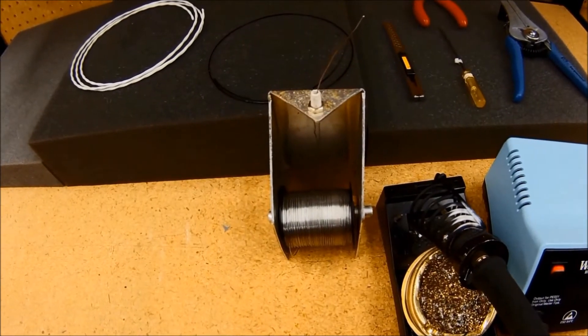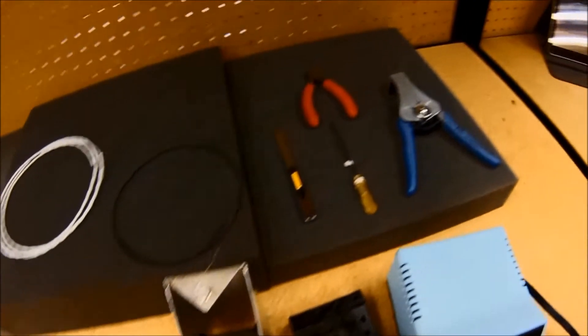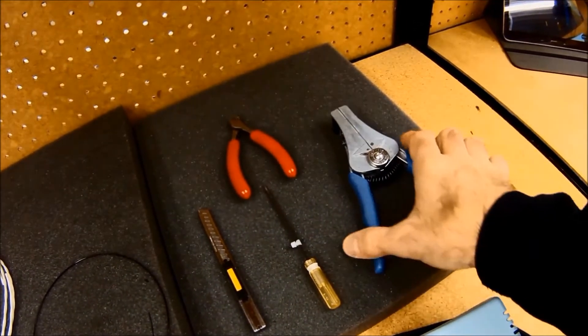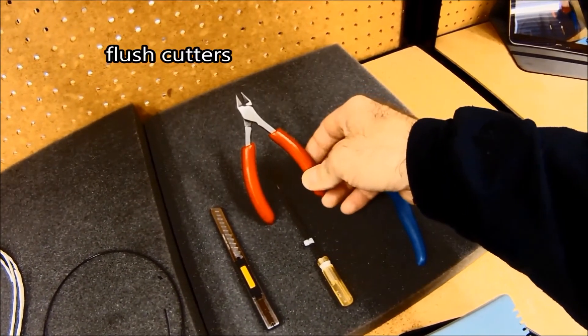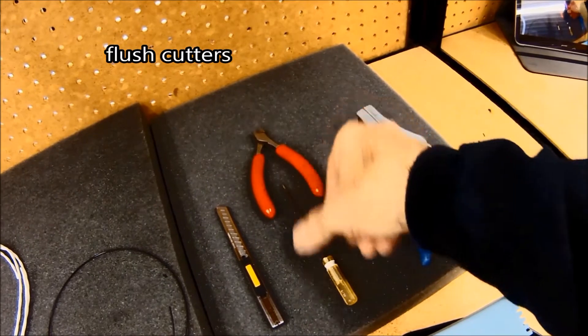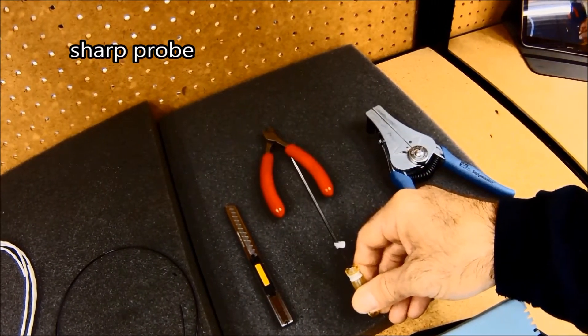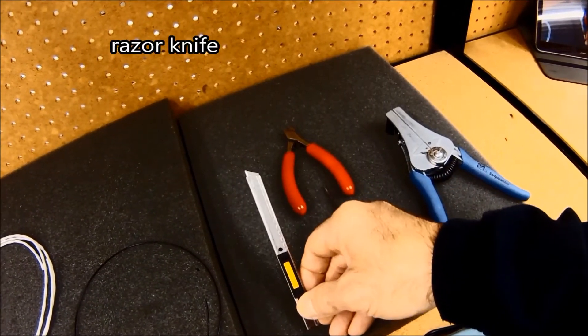I also have some 25 thousandths rosin core solder and some hand tools. I have wire strippers, flush cutting wire cutters, a sharpened probe or an awl, and a sharp razor knife.